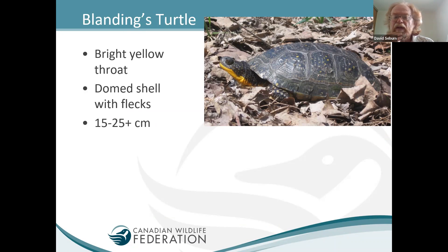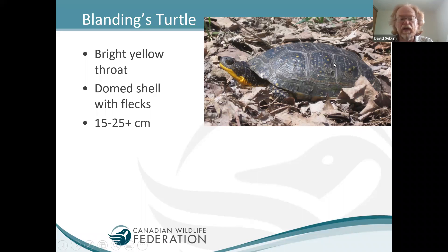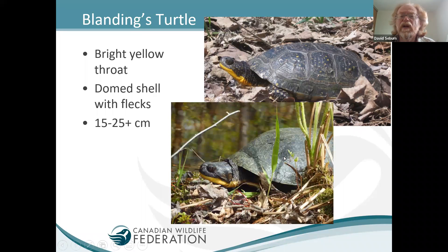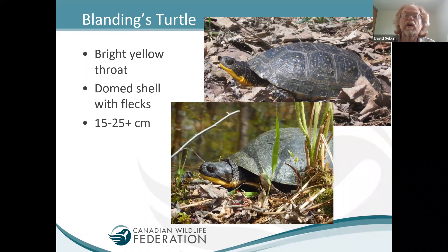The Blanding's turtle is widespread in eastern Canada and has a bright yellow neck and throat, which is very diagnostic. But the turtle may be shy and pull its head in, so you don't always have that feature. It has a series of speckles or spots on the shell, but these are highly variable among individuals — an older Blanding's may have much fainter spots. It's also a fairly large turtle, though juveniles and young adults will be smaller.